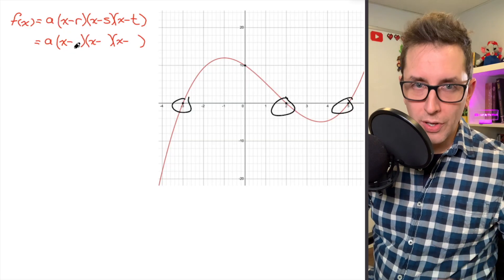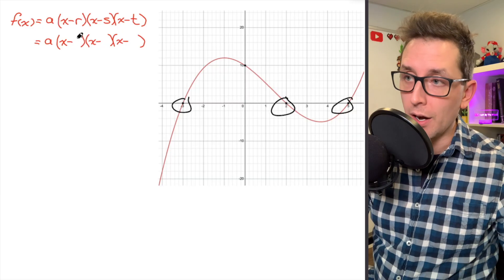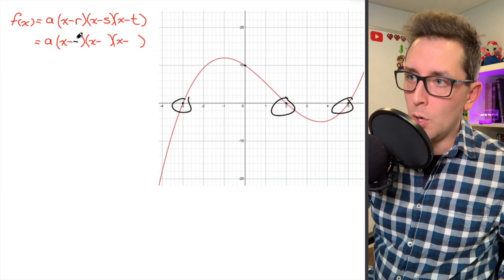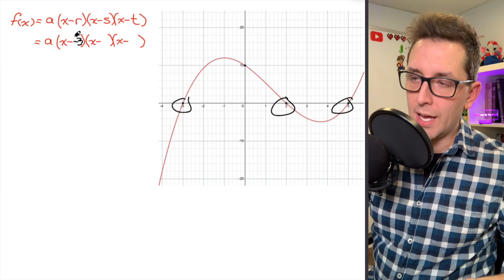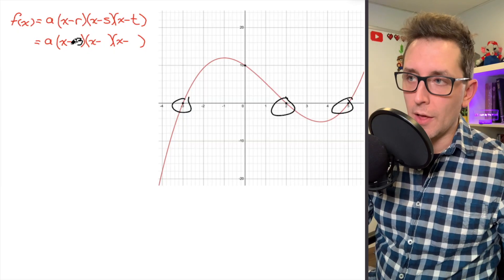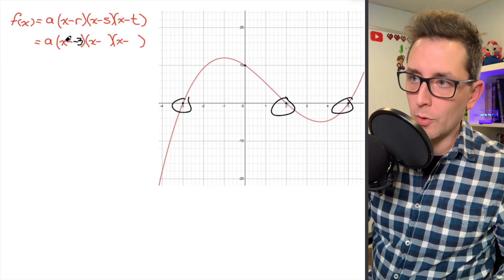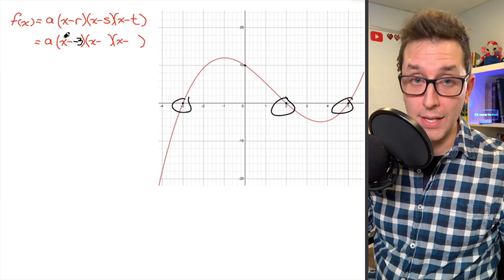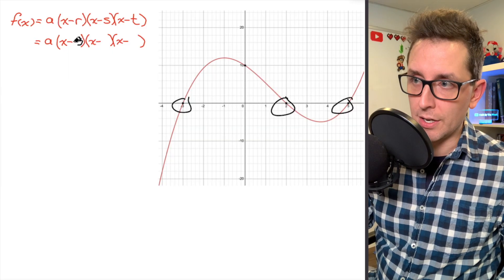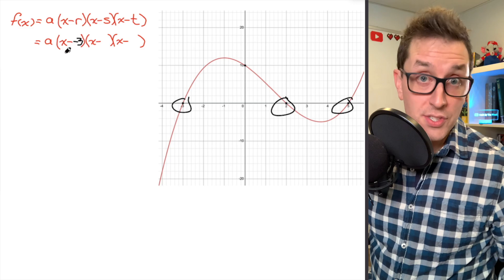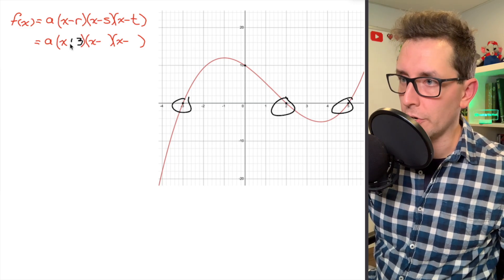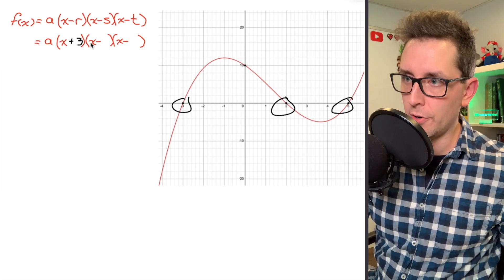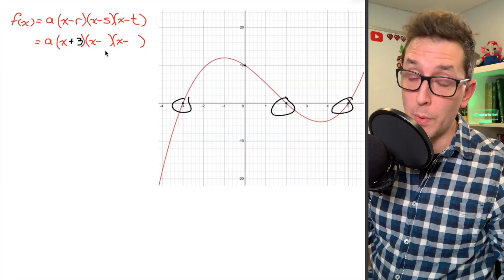So when I do that, I don't touch that subtraction sign. I'm going to leave that there, and I'm going to place a negative 3 where the r was. Now you're going to see I have negative, negative 3. That's really uncomfortable seeing that, so I'm going to change that into a positive. I know that negative times negative is a positive. So this set of brackets here is going to become x plus 3.